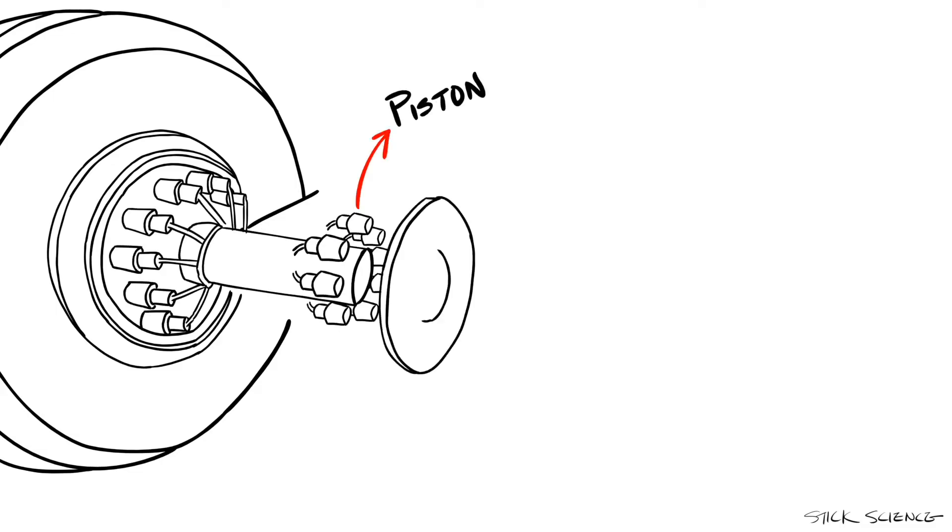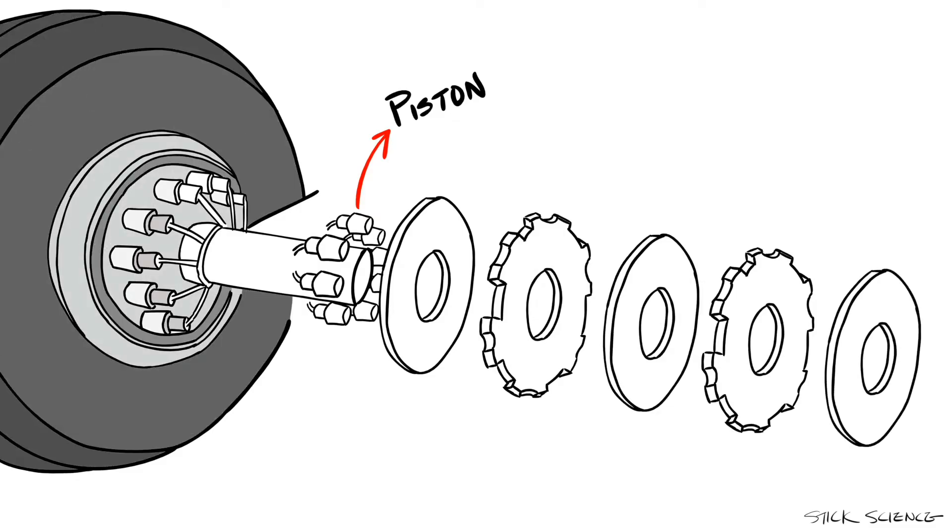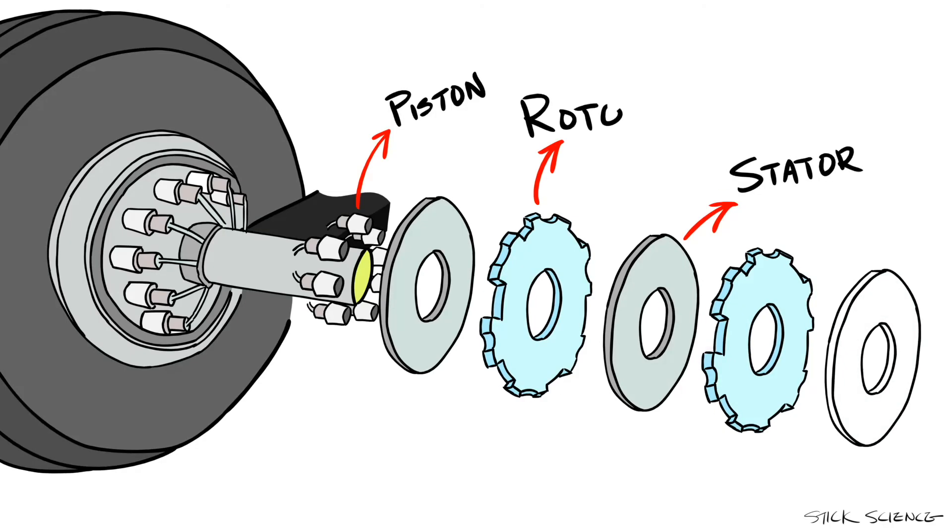Brakes on commercial airplanes are just like those on your cars. You have pistons that push on discs connected to the wheels to create friction. They're just much bigger. Instead of one or two pistons, you have several arranged in a circle that apply pressure on a stack of discs that alternate between stationary stators and rotating rotors.